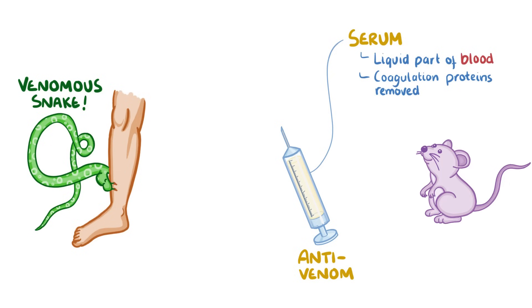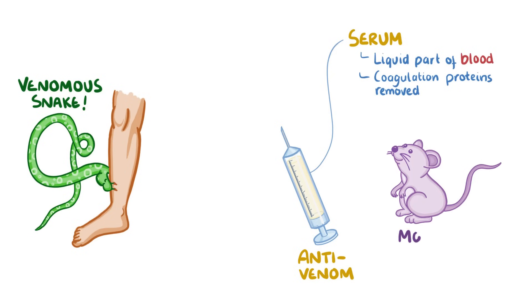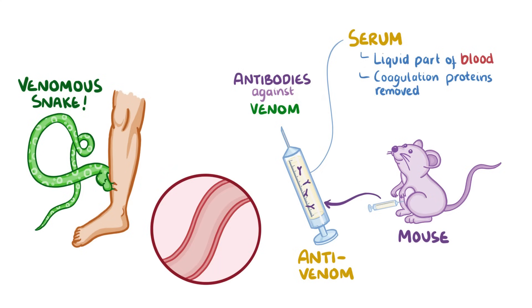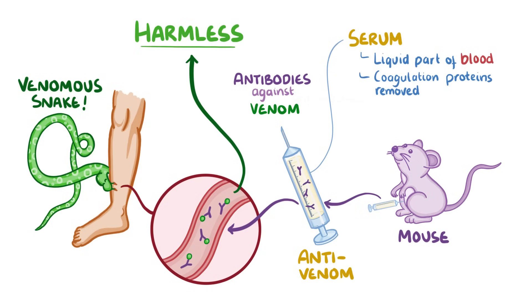The antivenom comes from another animal, like a mouse, and that mouse has already encountered that particular venom, and so it's developed antibodies against it. These antibodies can bind to the venom molecules, and then render them harmless.